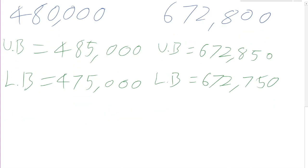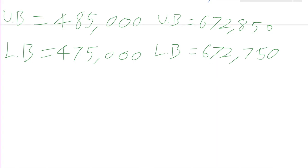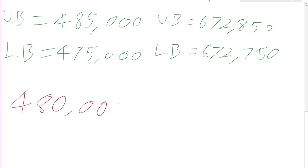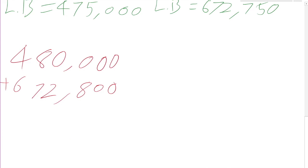I will talk more on upper and lower bounds in my next lesson. I have one more thing I want to cover before finishing, which is why degrees of accuracy actually matter and some of the traps we have to watch out for. If we have 480,000 — accurate to the nearest ten thousand — and we wanted to add 672,800 to that — which is accurate to the nearest hundred — what do we do? We've got two numbers which are both accurate to different degrees.